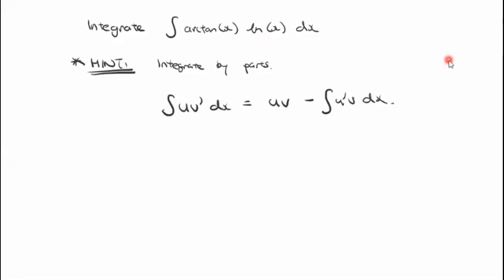Consider what's u and what's v' — there's more than one option here. I'm going to proceed, but you can give this a go yourself first and pause now. I'm going to proceed with letting u = log base e of x, and therefore v' would be inverse tan of x.